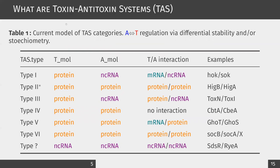TAS are classified in different categories based on the molecule type of the toxin and antitoxin, and how these two interact. The most studied group is type 2, where the antitoxin protein binds directly to the toxin protein and inhibits its action. Toxin and antitoxin can also interact at the RNA level. For instance, in type 1, the antitoxin is a small non-coding RNA that binds to the messenger RNA of the toxin. Tasmania covers any TAS type that has at least one protein-coding locus.